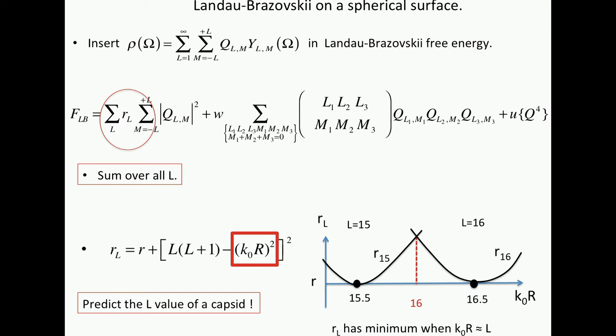So this is the L equals 15. This is R15. This is R16. This is R17. Now suppose you reduce R. The transition is exactly like Sergey said. It's where you first hit zero. The point where instabilities start is the parabola which goes to zero first. So in this interval, it's this parabola which goes unstable first at this point. But if you increase K0R in this interval, when K0R is bigger than 16, it's the second parabola. So there's an infinite sequence of parabolas. And for given K0R, you can predict which L is going to appear. RL is a minimum when K0R is L. So the big advantage of Landau-Brazovsky is that you can look at the competition between different L.